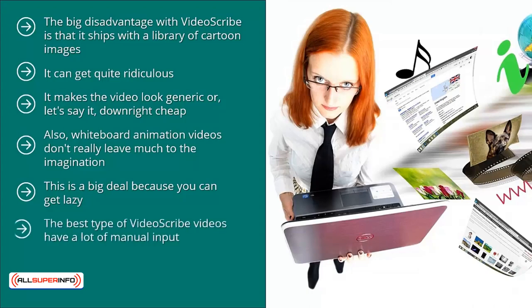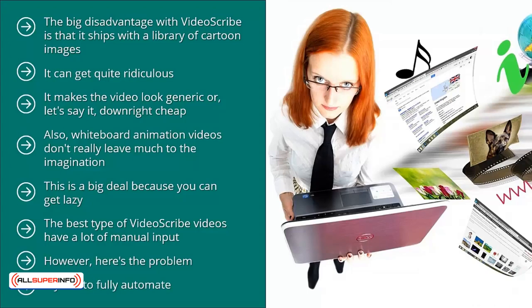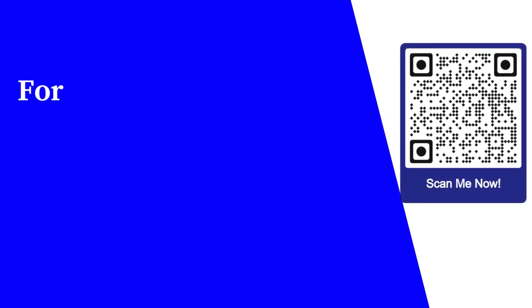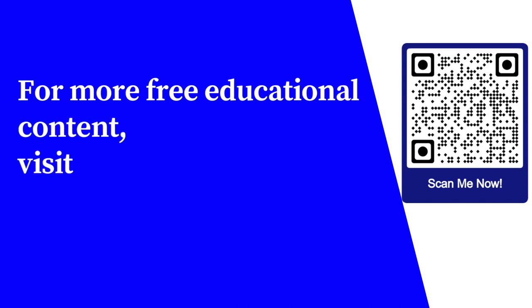Your video is not going to have the impact that you'd like it to have. The best type of Video Scribe videos have a lot of manual input — that's how you maximize quality. However, you can still automate using Video Scribe by plugging in the audio and library and letting it work. But the more automated or generic-looking your video, the less likely you should use it. Try not to fully automate; you still have to step in to make sure the quality is decent.